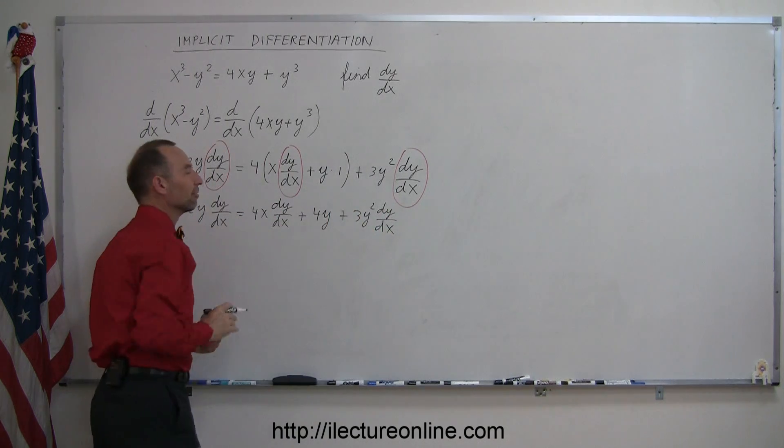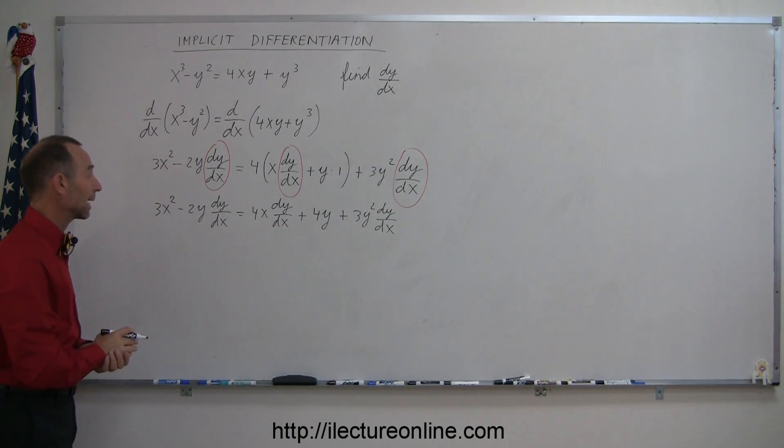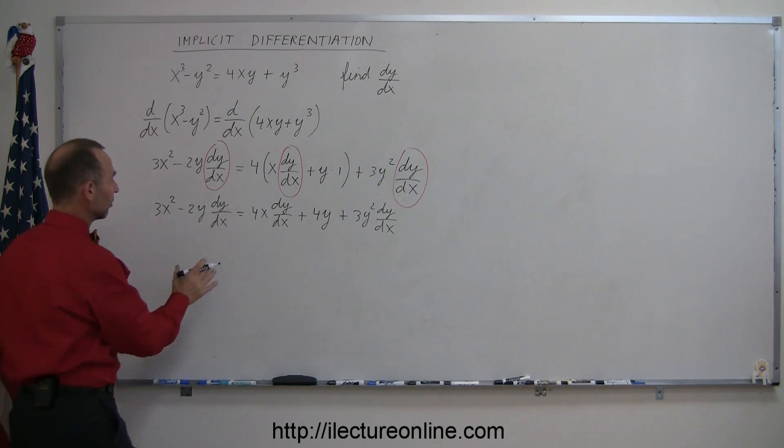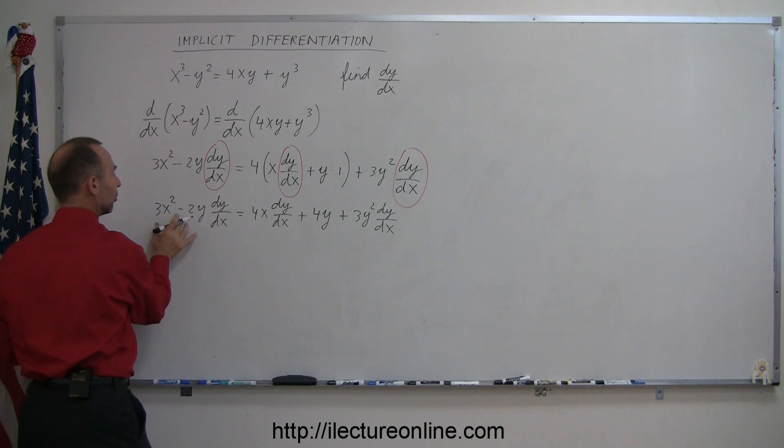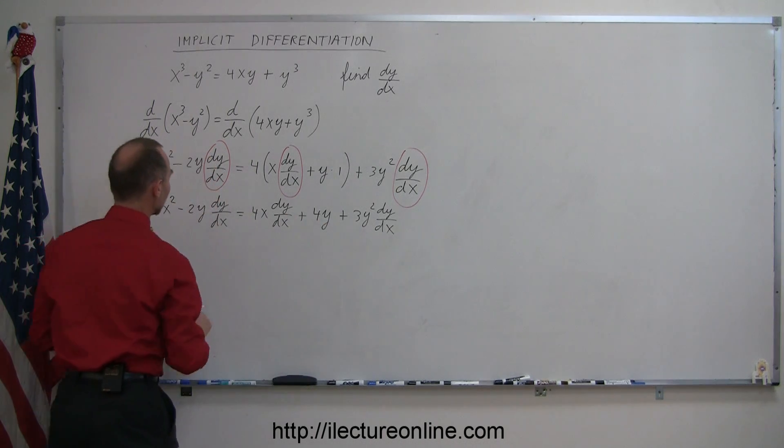So maybe I shouldn't have taken the 4 out in the first place because I ended up putting it back in. It makes it easier, but now you can see that this term, this term, and this term all have to appear on the left side. This term and this term need to be on the right side.